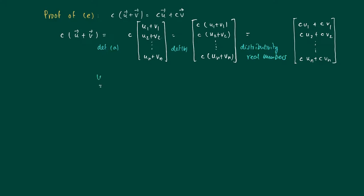So now we use the definition of the sum of the following two vectors. So c times u1 plus c v1, c u2 plus c v2, etc., to c un plus c vn.